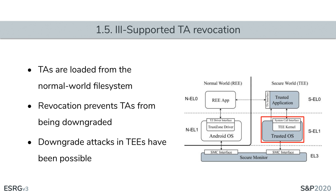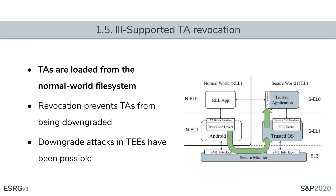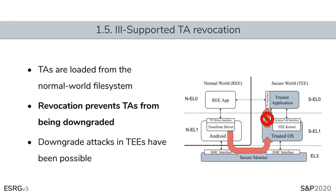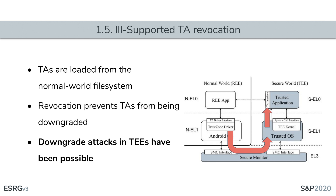The last architectural issue is trusted application revocation, an issue within the trusted OS. It is common for TEs to load trusted applications from the normal world file system, making them easier to install dynamically and to update to fix security vulnerabilities. TEs digitally sign approved trusted applications, but after patching, vulnerable versions must not be allowed to run. However, researchers have found it possible to load vulnerable versions of trusted applications within the Qualcomm and Trustonic TEs, allowing researchers to compromise supposedly patched versions of TE systems.